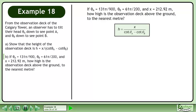We know from part A that h equals x over cotangent theta A minus cotangent theta B. Plug in the values of x, theta A, and theta B.